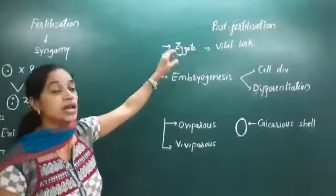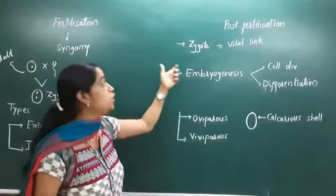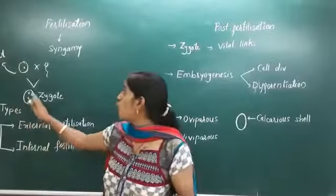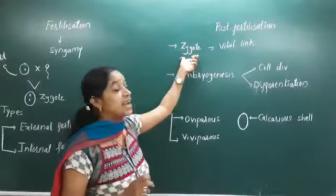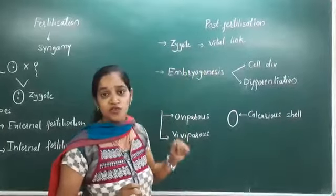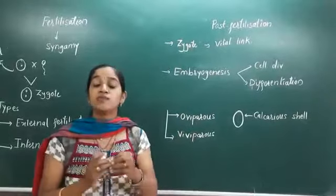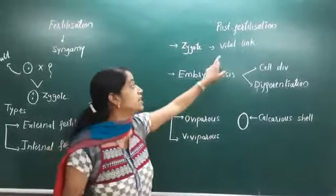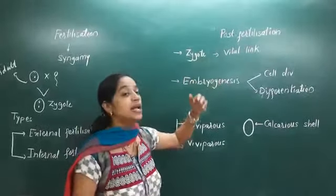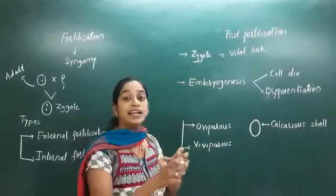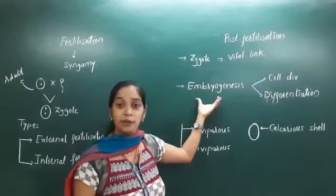The first event is nothing but zygote. Zygote is product of fusion of male and female gametes. We also call this zygote as vital link between two generations, parent and the offspring. Every living organism starts their life with a single cell called zygote. Now this zygote, next what it will do is it will start dividing and formation of embryo takes place, and that process is called embryogenesis.